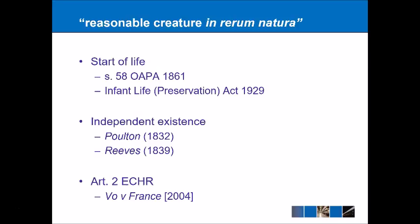When can a baby actually be murdered? The idea is having independent existence from the mother. Poulton (1832) talks about the baby being completely expelled from the mother, but it's not necessary, according to Reeves, that the umbilical cord must have been cut. These cases are relatively old, so modern medical definitions of independent existence would likely come into play today. Similarly, we'd be reliant on medical expertise for the end of life, often defined as the end of brainstem activity.